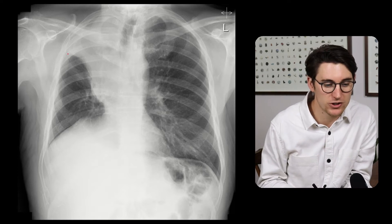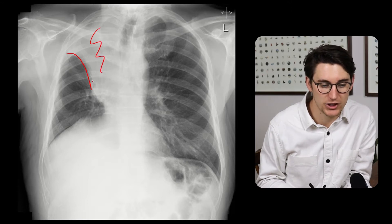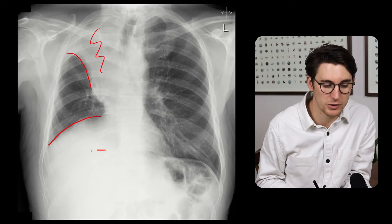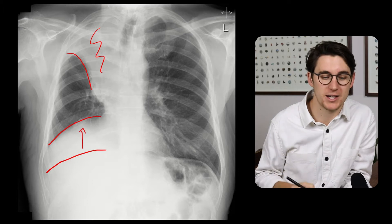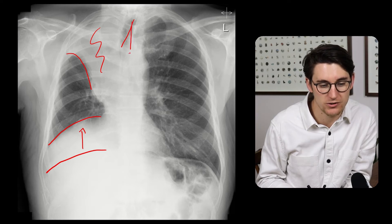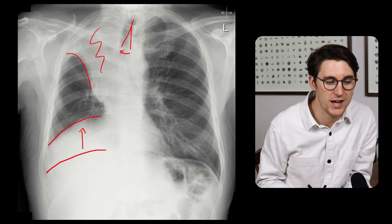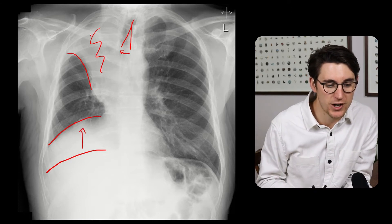We can see this horizontal fissure here has been pulled right upwards towards this area of collapse. It's got this concave shape. Our right hemidiaphragm similarly has been pulled upwards — it would normally be sitting around here — with some significant movement comparing it to the left. The trachea itself has deviated towards the right, pulled across to that area of volume loss, and the rib spacing here has become crowded in this local area of volume loss.